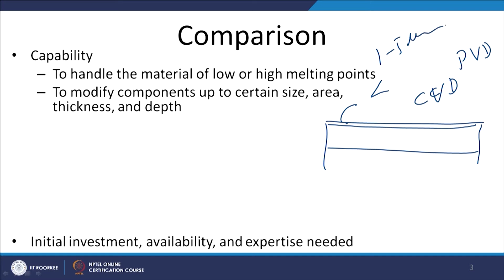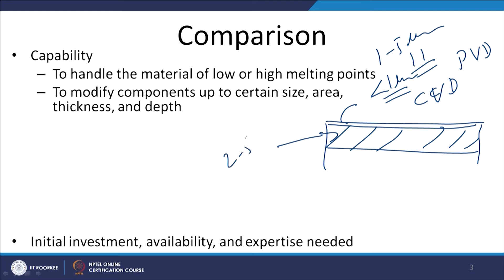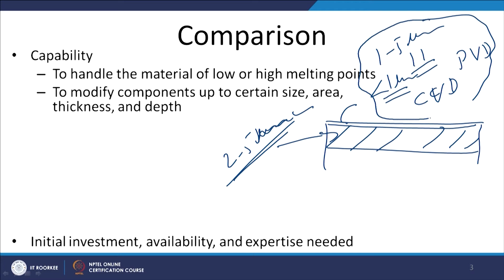Processes like induction hardening, flame hardening, laser hardening, or plasma hardening fall in this first category. The second category involves processes where a change in the chemical composition of the surface and near-surface layer is used to achieve the required properties and functionalities. Processes in this category include carburizing, nitriding, cyaniding, vanadizing, chromizing, and laser alloying.